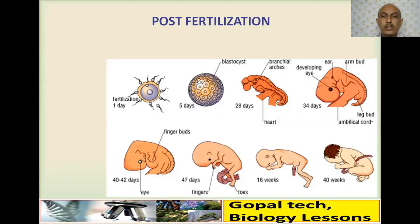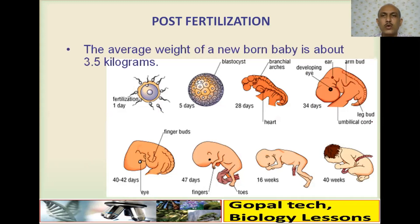The development progresses from fertilization on day one, then after 5 days, 28 days, 34 days, 40–42 days, 47 days, 16 weeks, and approximately 40 weeks when fully developed and ready for delivery. The average weight of a healthy newborn baby is about 3.5 kilograms; below 2.5 kilograms indicates the baby is not fully developed.